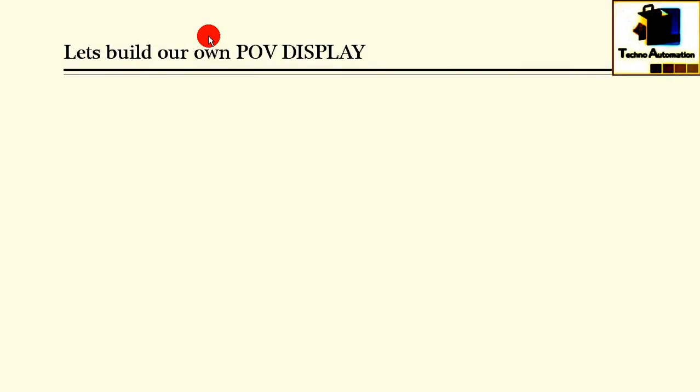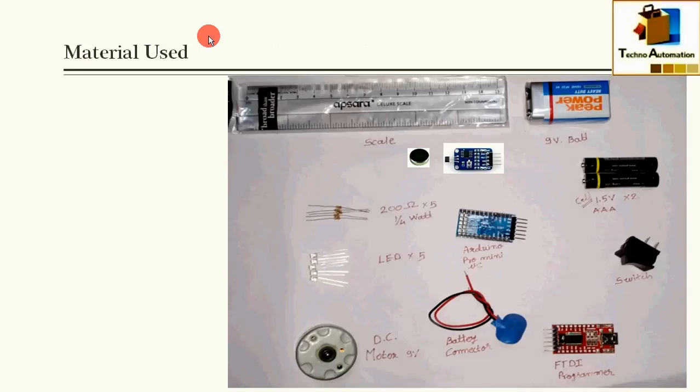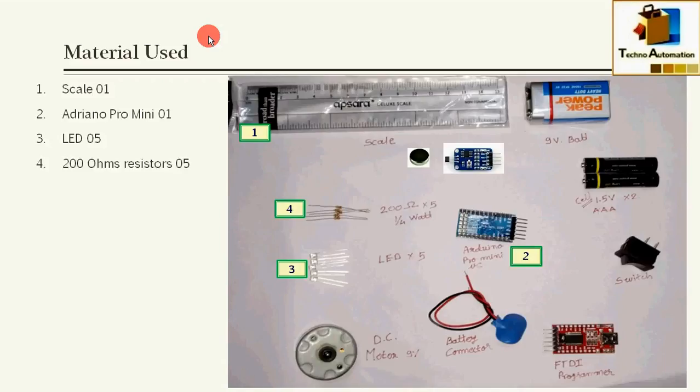So now we're understanding the working of POV display. Let's build our own POV display. For making this fan, I have used one scale, one Arduino Pro Mini, 5 LEDs, 200 ohm resistors, 1.5 volt battery, 9 volt battery, battery connector, DC motor, Hall sensor, magnet, FTDI programmer, and finally switch.